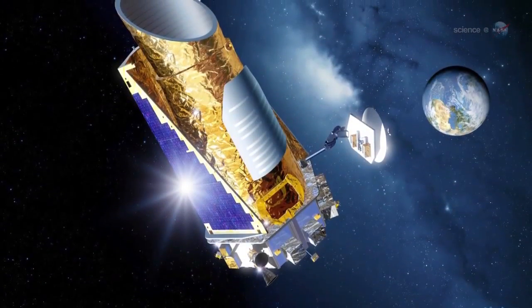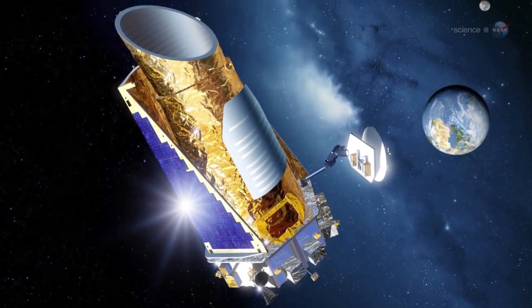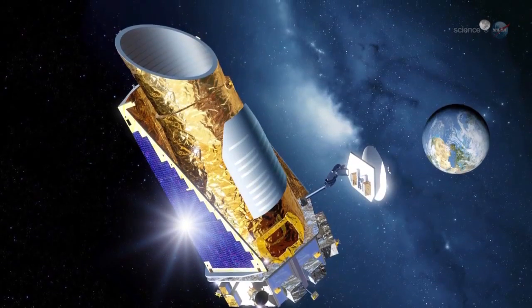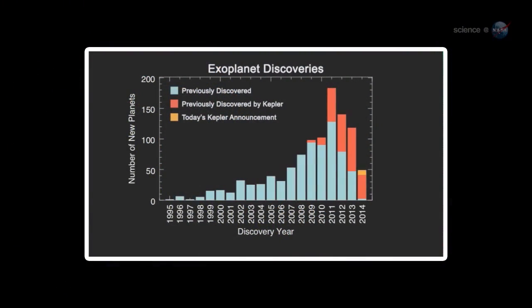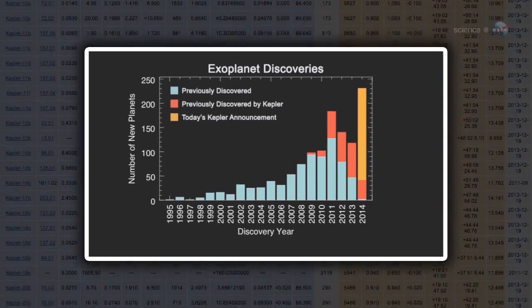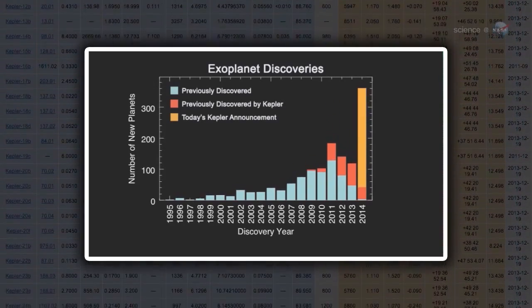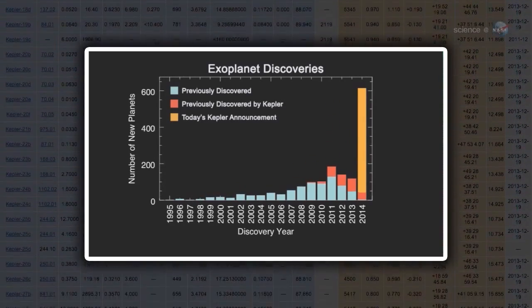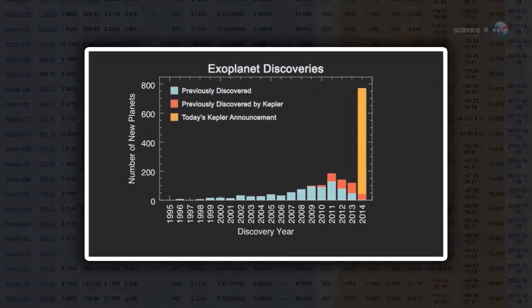On February 26th, the Kepler team announced 715. Kepler has always been good at finding planets. Even before the announcement, the observatory had confirmed 246 new worlds outside the solar system. The latest discoveries almost quadruple that number.